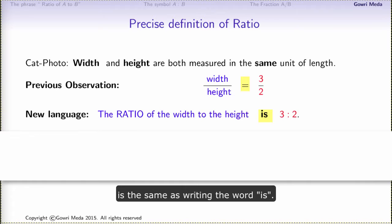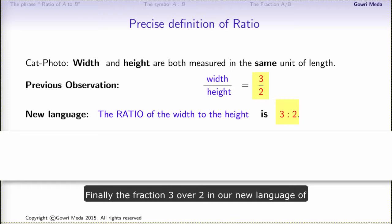Next, the equality symbol, as you already know, is the same as writing the word 'is.' Finally, the fraction 3 over 2 in the new language of ratios is simply 3 to 2, written as 3 colon 2.